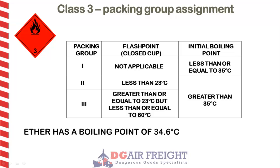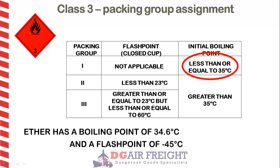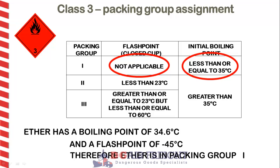Another substance, ether, has a boiling point of 34.6 degrees Celsius. Although its flashpoint is minus 45 degrees Celsius, this information is not applicable as it is automatically assigned packing group 1, which is high danger.